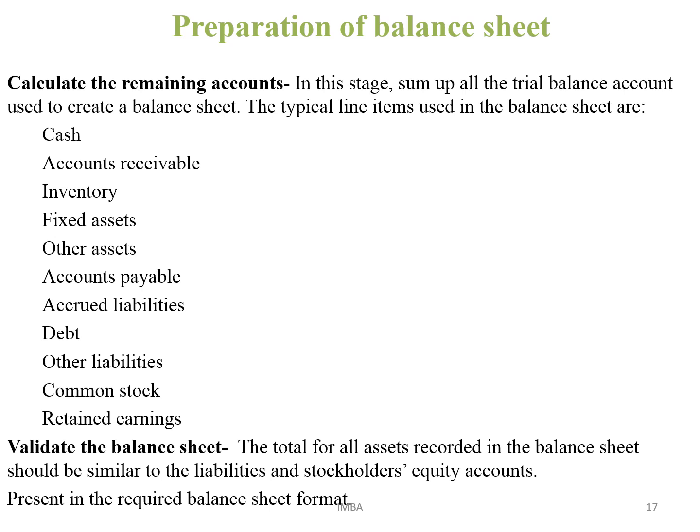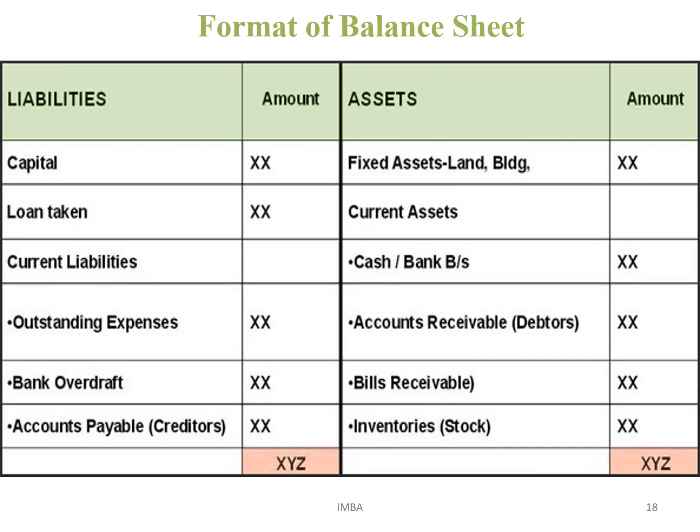Preparation of balance sheet: all items such as cash, accounts receivable, inventory, fixed assets, accounts payable, accrued liability, debt, and other liabilities are shown in the balance sheet. On the left-hand side we show all liabilities and on the right-hand side we show all assets. After completion, both sides of the balance sheet should be equal, which justifies that for every debit there is a credit — if there is a giver, there is a receiver. Since all assets equal equities and equities are claims against those assets, a balance sheet is true when both sides are equal.